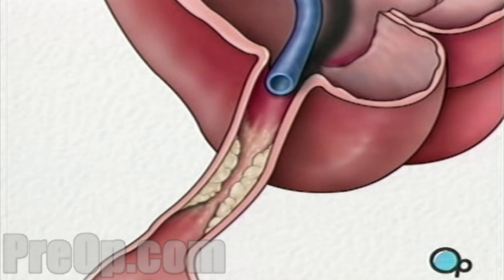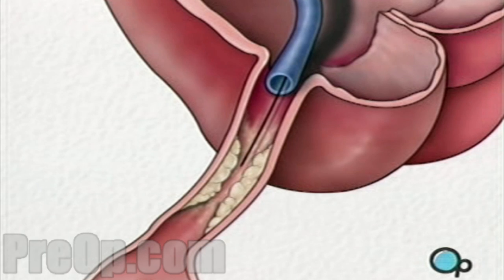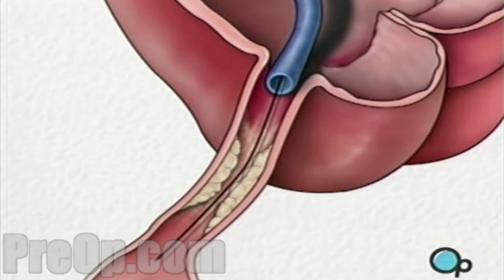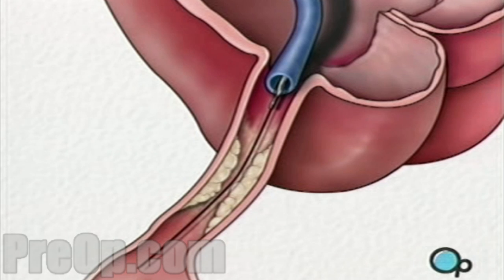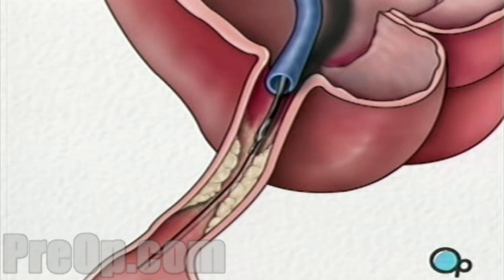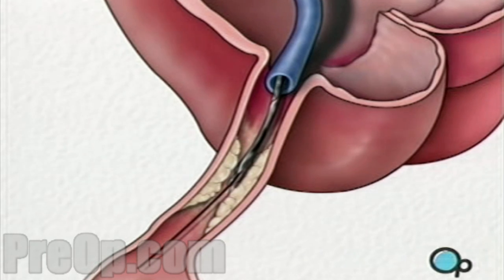Once the restricted area has been identified, a thin wire is inserted into the catheter and is guided all the way to the blocked area and then slightly beyond. This wire acts as a guide for the balloon catheter, allowing your doctor to position the deflated balloon precisely in the middle of the narrowest part of the coronary artery.